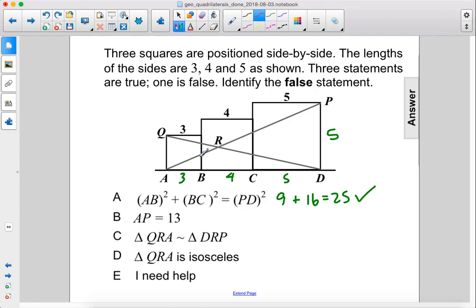AP equals 13, so this is the hypotenuse of this right triangle, ADP. So here we have a right angle, we have a length of 5, here we have a length of 12, which is 3 plus 4 plus 5, so this is a special right triangle.